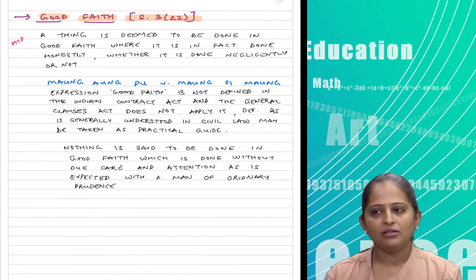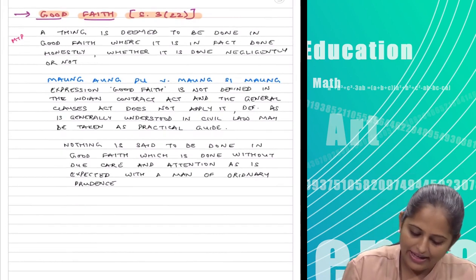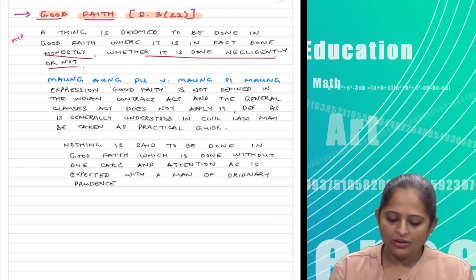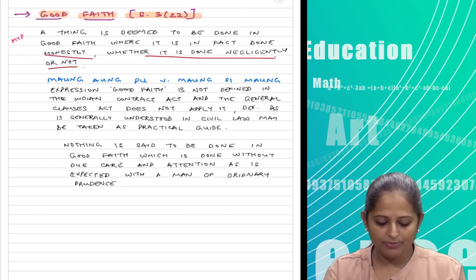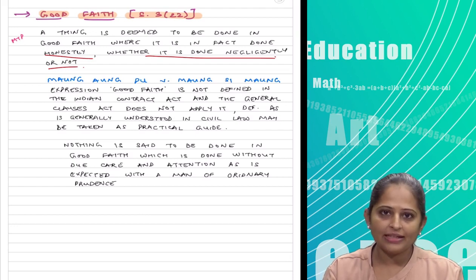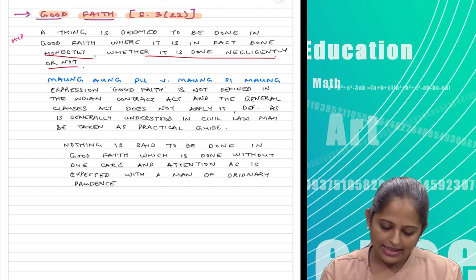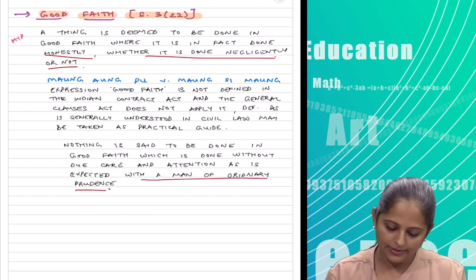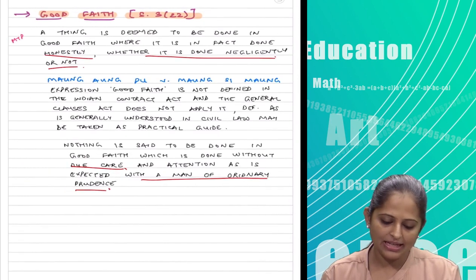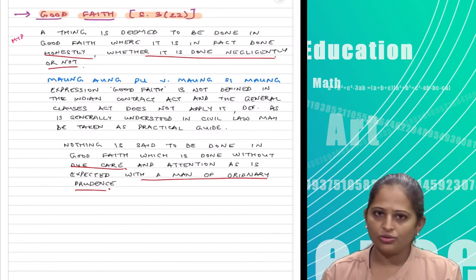Good faith — a thing is deemed to be done in good faith where it is in fact done honestly, whether or not it is done negligently. There is a Supreme Court case law, Mong Ong versus Mong Si Pong, which says that nothing is said to be done in good faith which is done without due care and attention as expected of a man of ordinary prudence. This has been asked in MTP and is a simple definition that can be answered generically.